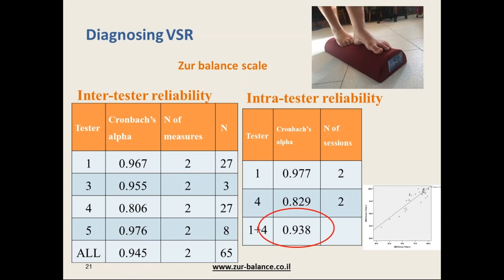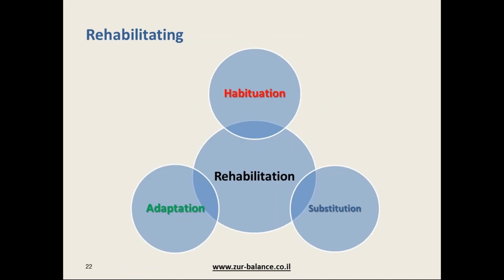Now that we have the diagnosis — the vestibular ocular reflex and the vestibulospinal reflex — along with a full history of what happened with the patient, we need to choose and build the right rehabilitation program tailored for the patient. The program should contain exercises from three different methodologies: habituation, adaptation, and substitution.